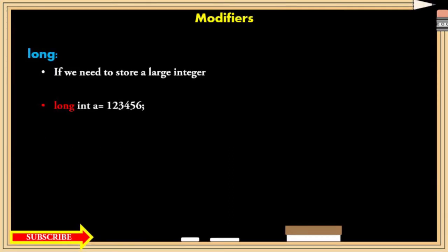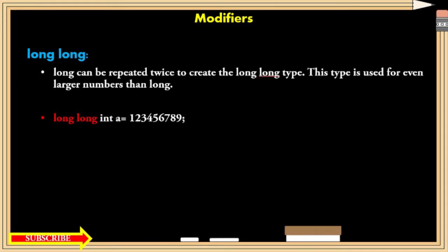Long. If we need to store large integer values, then we can make use of long modifier. Long long. Long can be repeated twice to create long long modifier. This type is used for even larger numbers than long modifier.